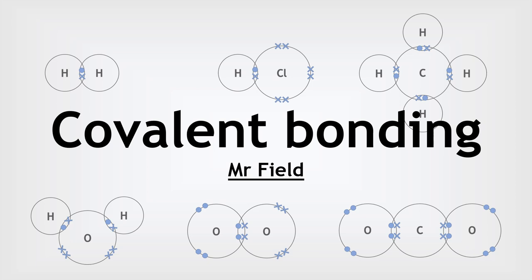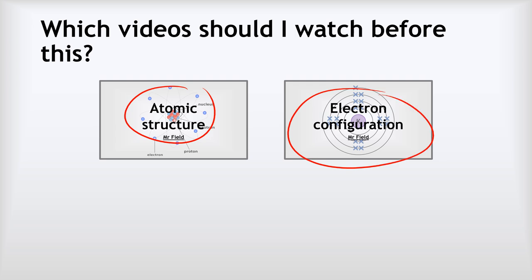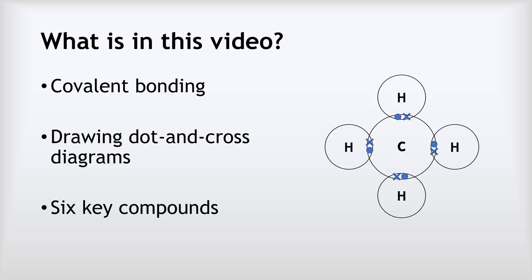Hello, this is Mr. Field, and this is my video on covalent bonding. Before you watch this video, you need to make sure you are confident on atomic structure and electron configuration, so check out my previous videos on those two things. In this video, we are going to be looking at covalent bonding, working through some examples of drawing dot and cross diagrams, and then looking at the structures of six key compounds that are in the Edexcel GCSE specification.